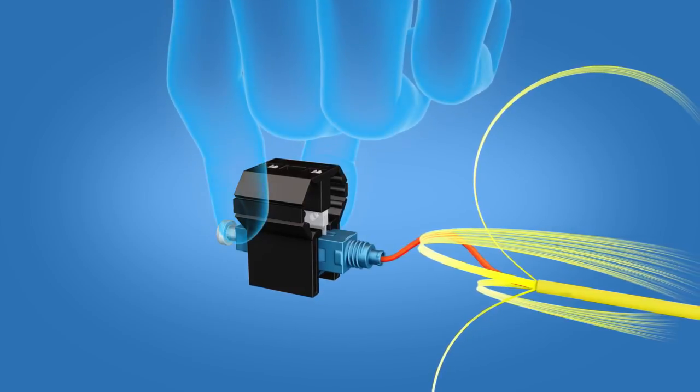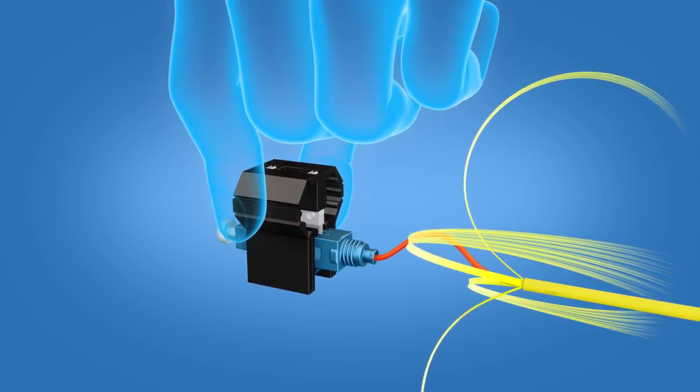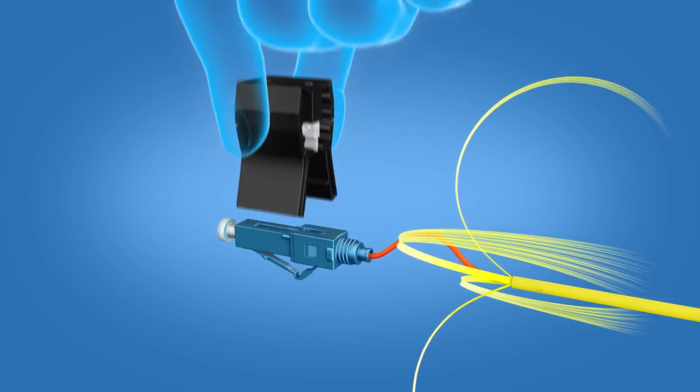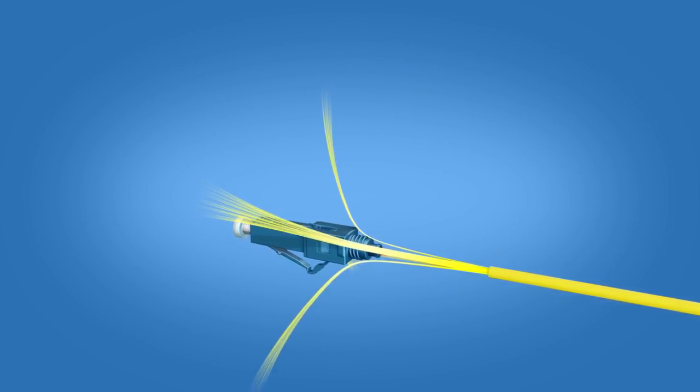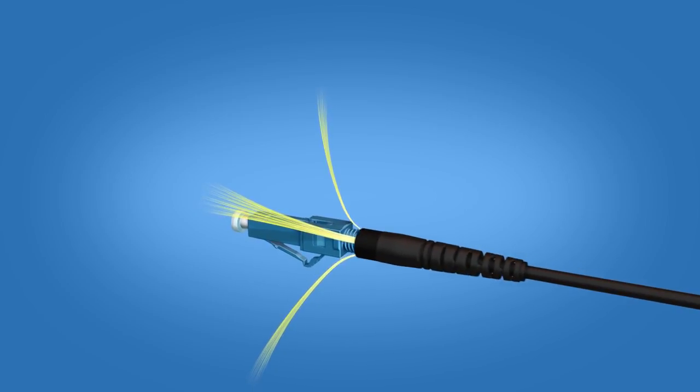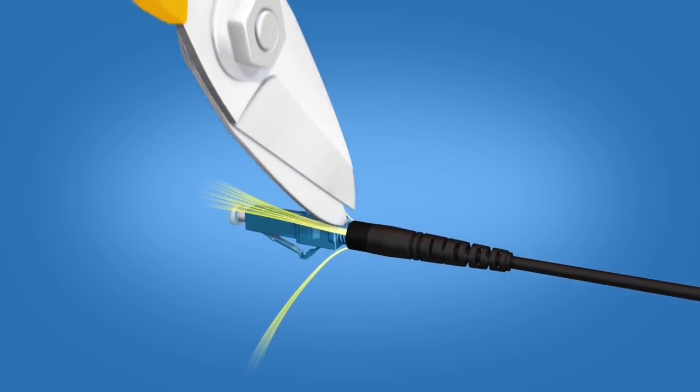Release the wedge clip by squeezing both sides and remove the wedge clip. Divide the Kevlar evenly on both sides and screw the boot on halfway. Trim excess Kevlar using the Kevlar scissors.